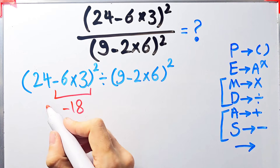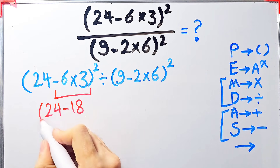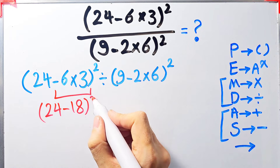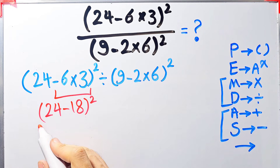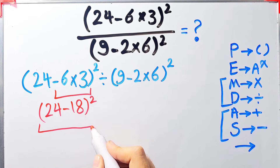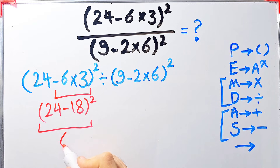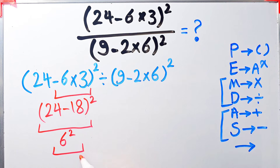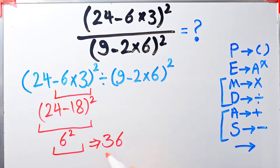Now we have 24 minus 18 inside the parenthesis. 24 minus 18 equals 6. Now we have 6 to the power of 2. 6 to the power of 2 equals 36. The final answer of the first parenthesis equals 36.